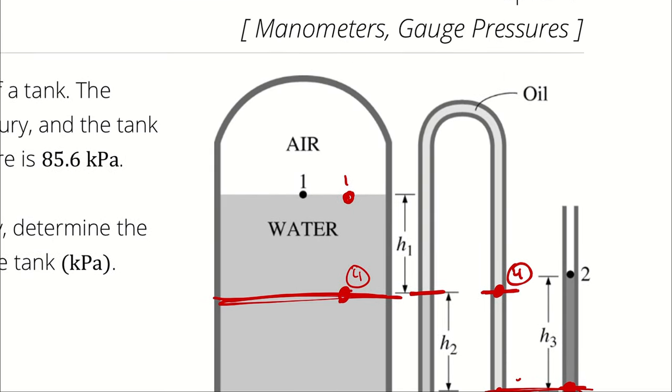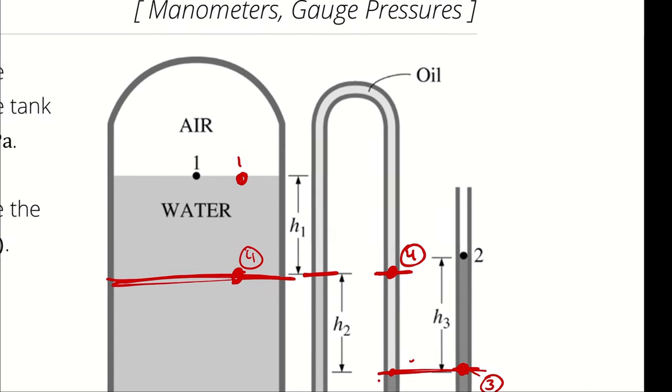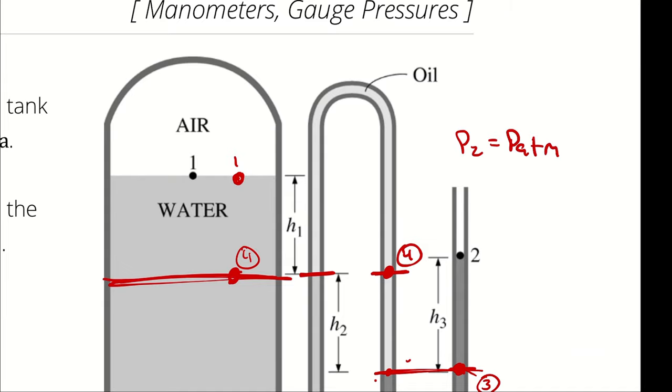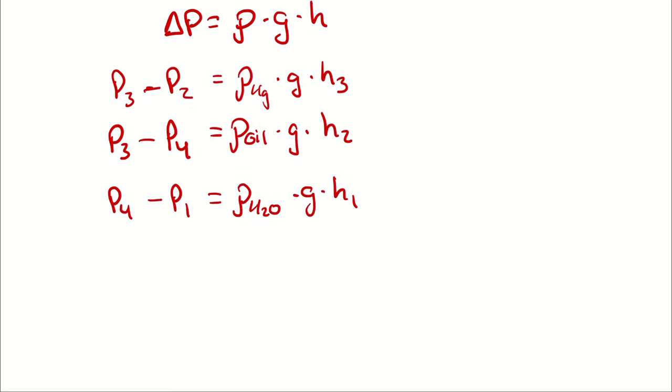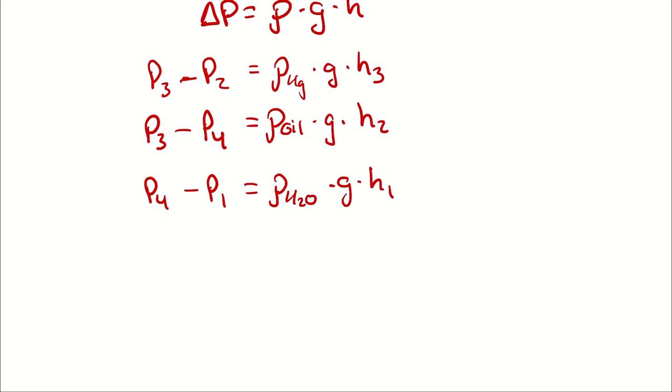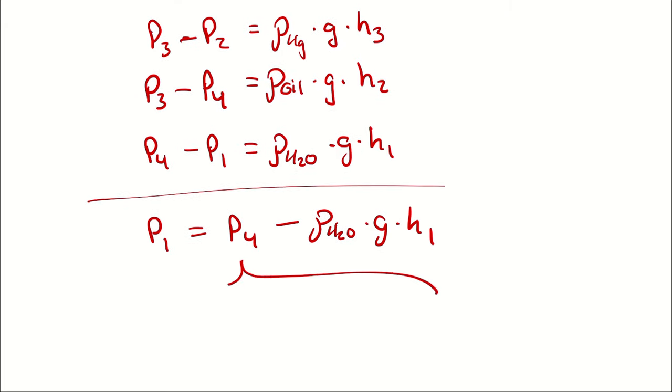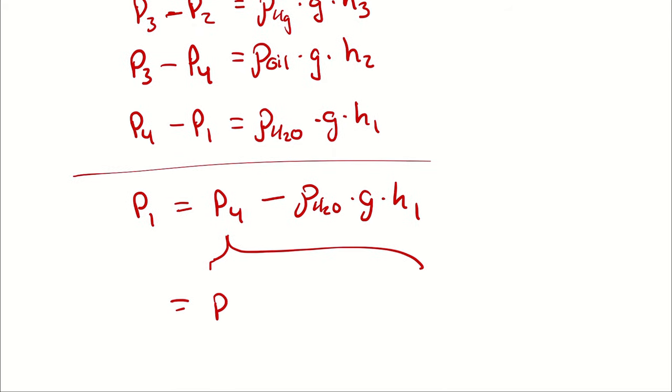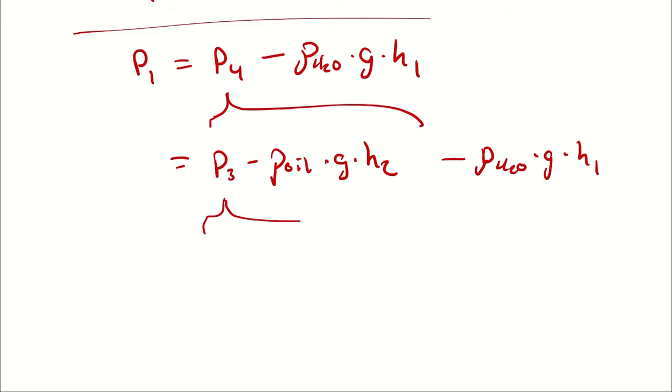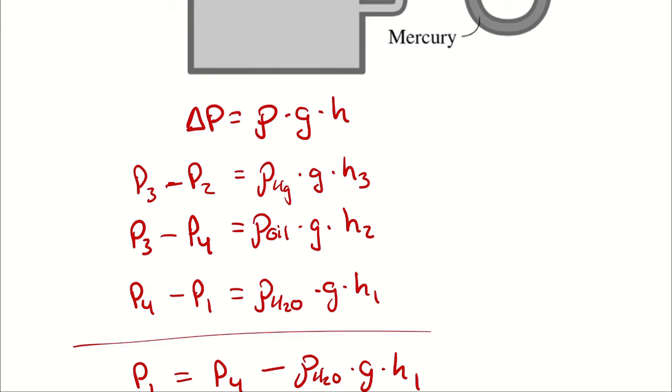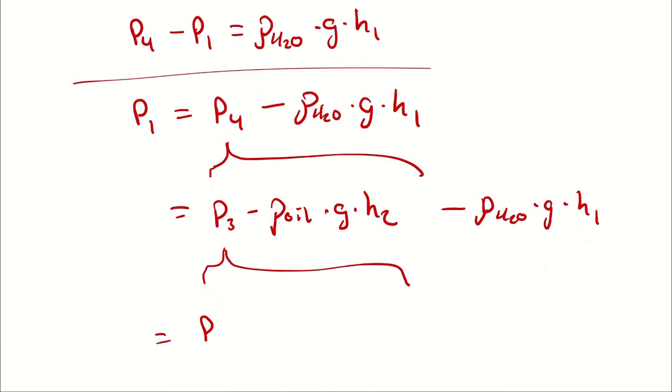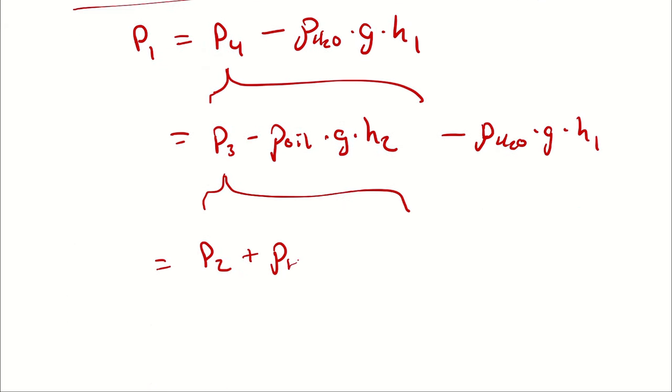And P1 is what I'm actually looking for, and P2 is equal to atmospheric pressure because it's open to the atmosphere. So I can rearrange this and write it as a single equation. I can say P1 is equal to P4 minus density of water times gravity times H1. And then I can substitute in for P4 and write P3 minus density of oil times gravity times H2. And then I can substitute in for P3 and write that as P2 plus density of mercury times gravity times H3.